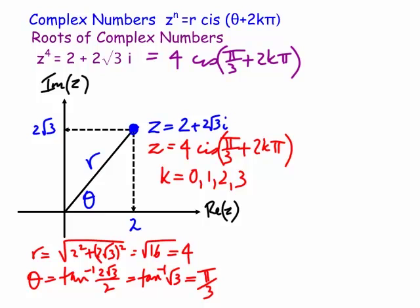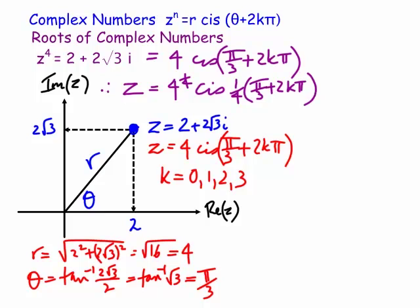Taking the fourth root: z = 4^(1/4) · cis((π/3 + 2kπ)/4) = √2 · cis((π/3 + 2kπ)/4), using De Moivre's theorem to bring the quarter power down onto the argument. Now substitute k = 0, 1, 2, 3. For k = 0: z₁ = √2 cis(π/12).